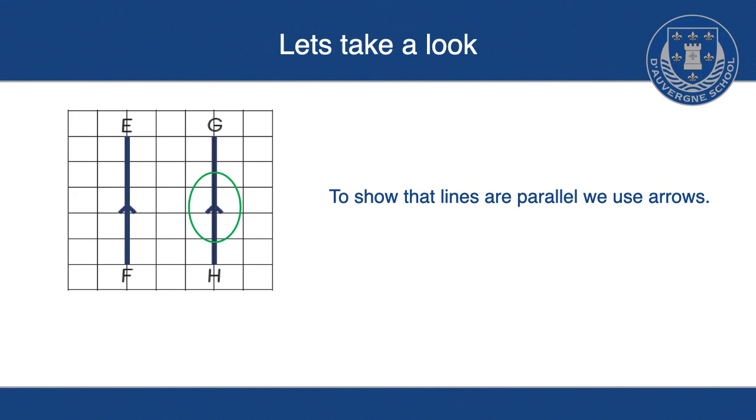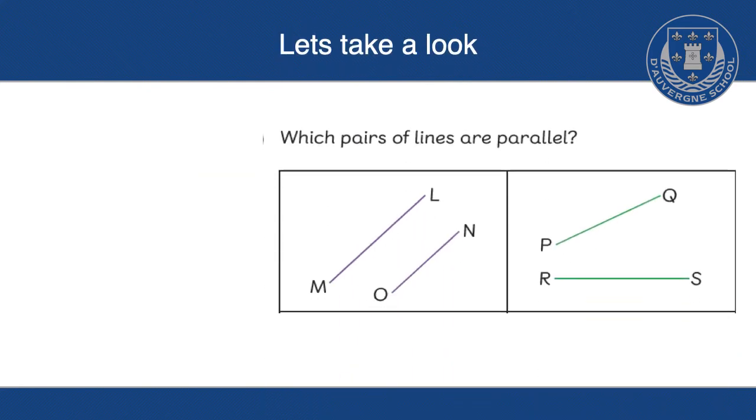Or if you want to use it to symbolise or show that they're parallel. So if we look at this question, it says, which pairs of lines are parallel? So do you think that line M and L and O and N are parallel to one another? Or do you think that lines P and Q and R and S are parallel? Pause it, see what you think, have a discussion. Why are they parallel? Why aren't they parallel? And then we'll have a look.